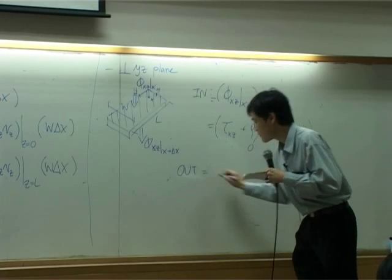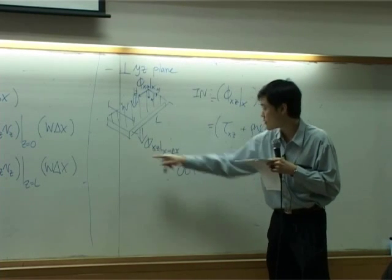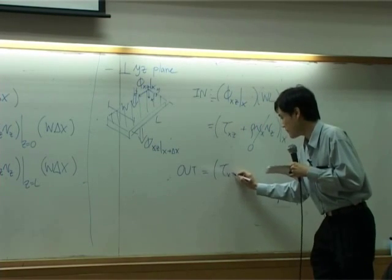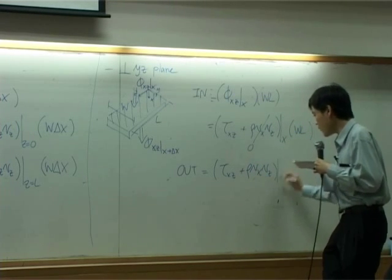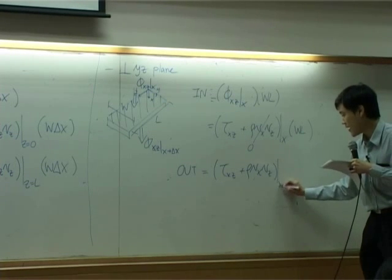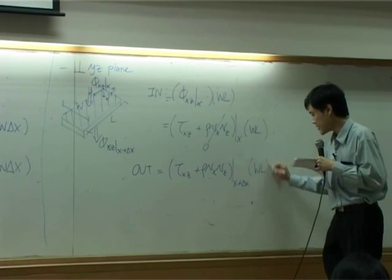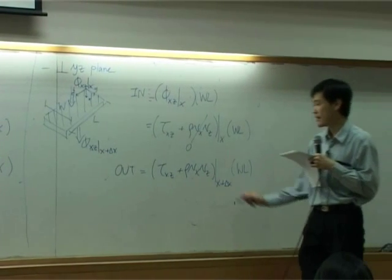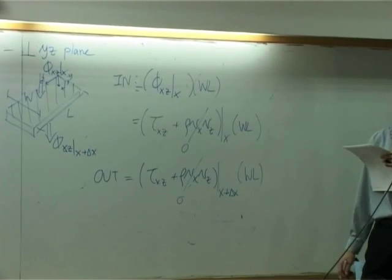Output. Out supposed to go for this one. It looks the same. The only difference is location. The out is going at X plus delta X. The area remains the same. And again, VX is zero.